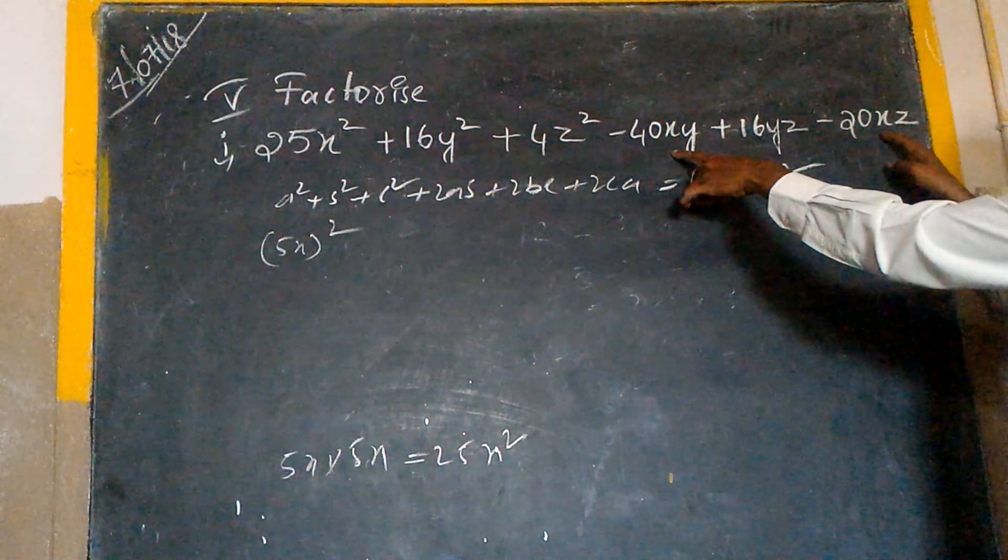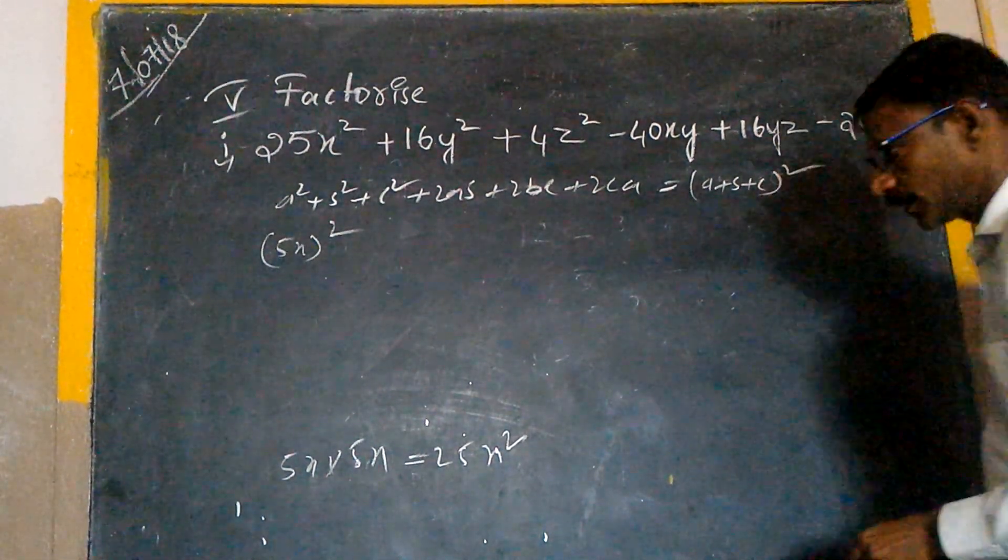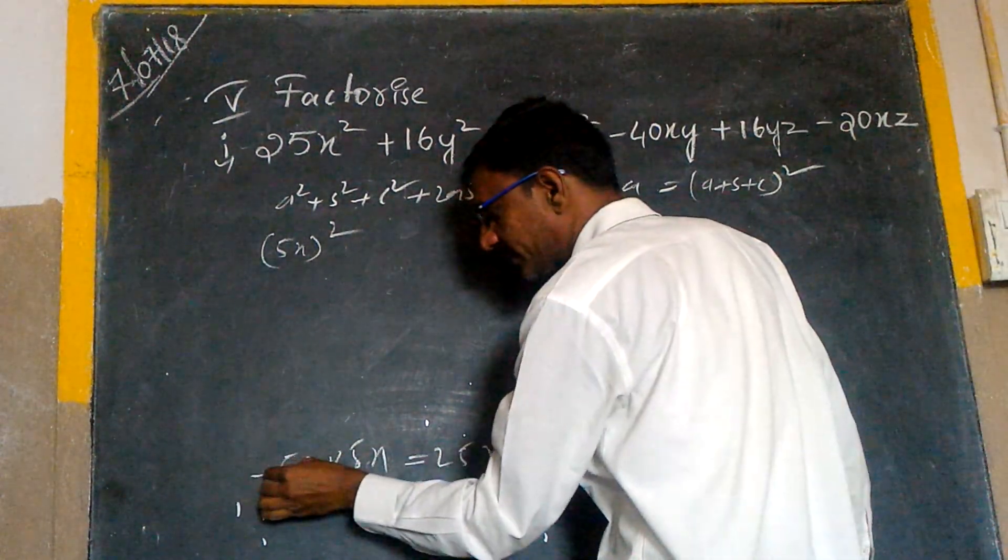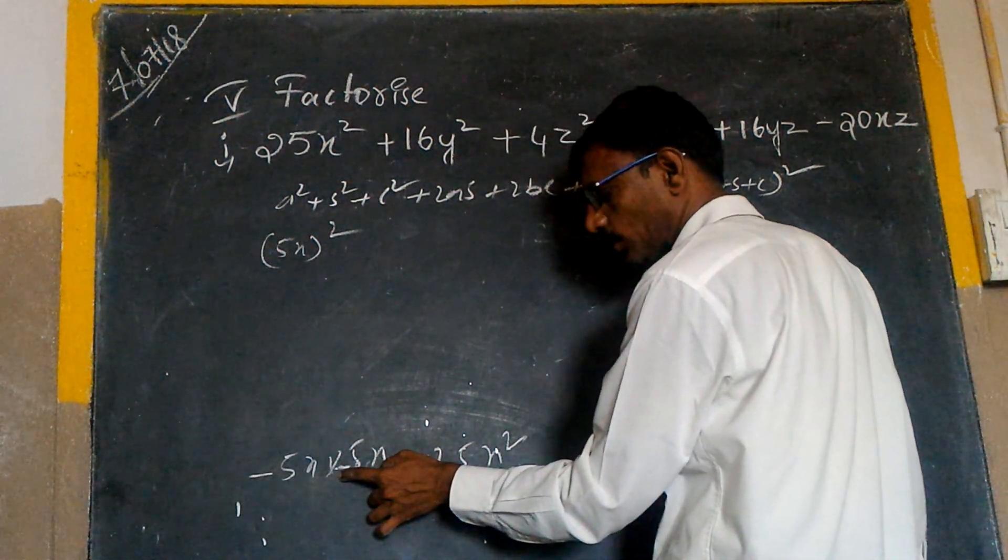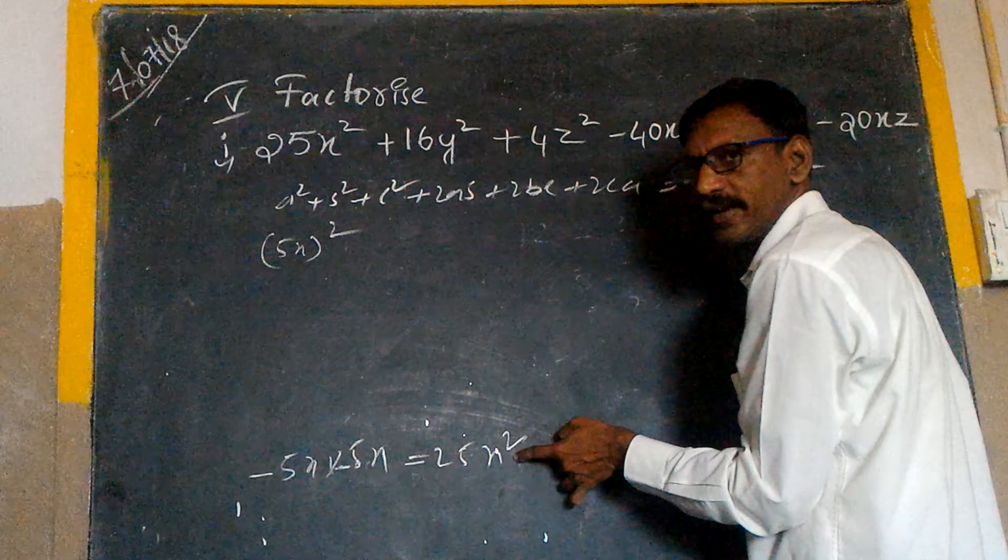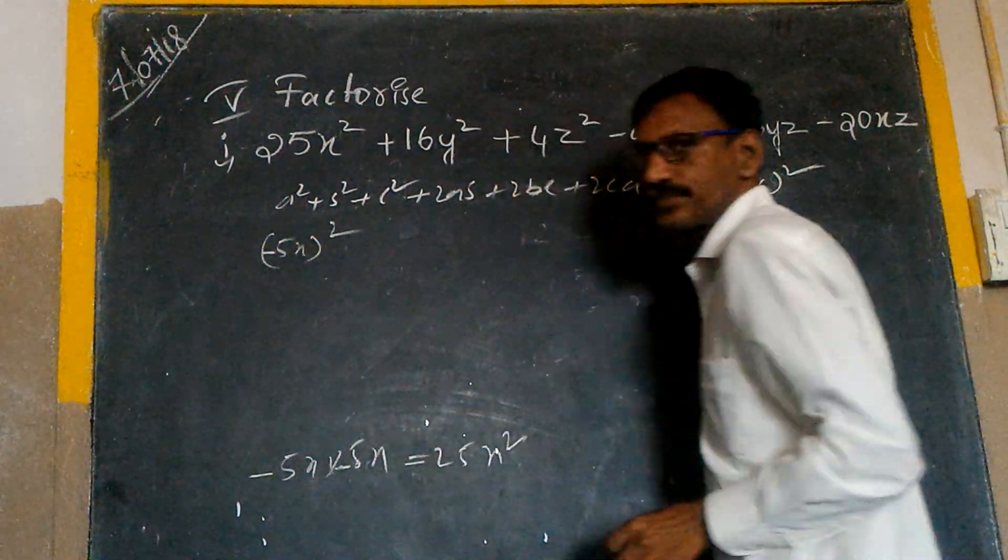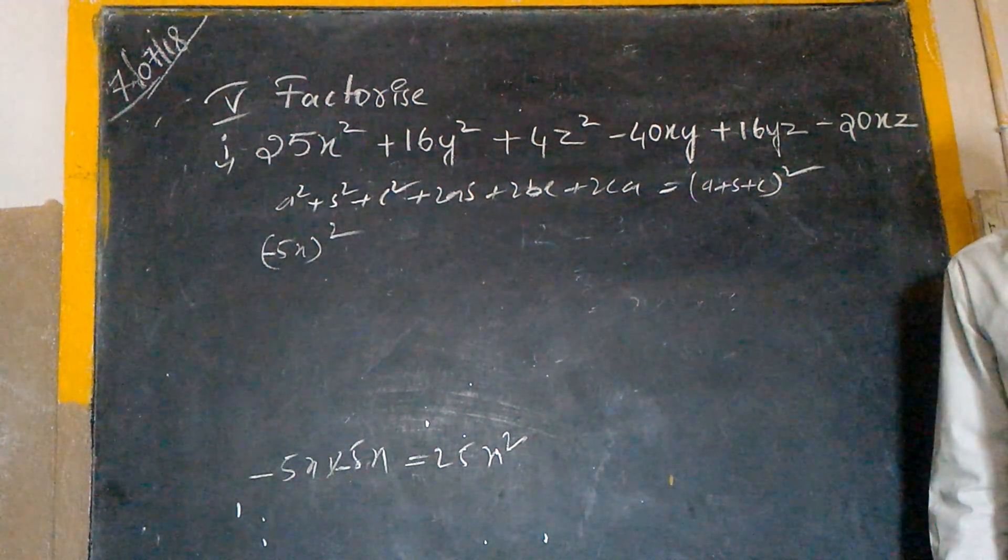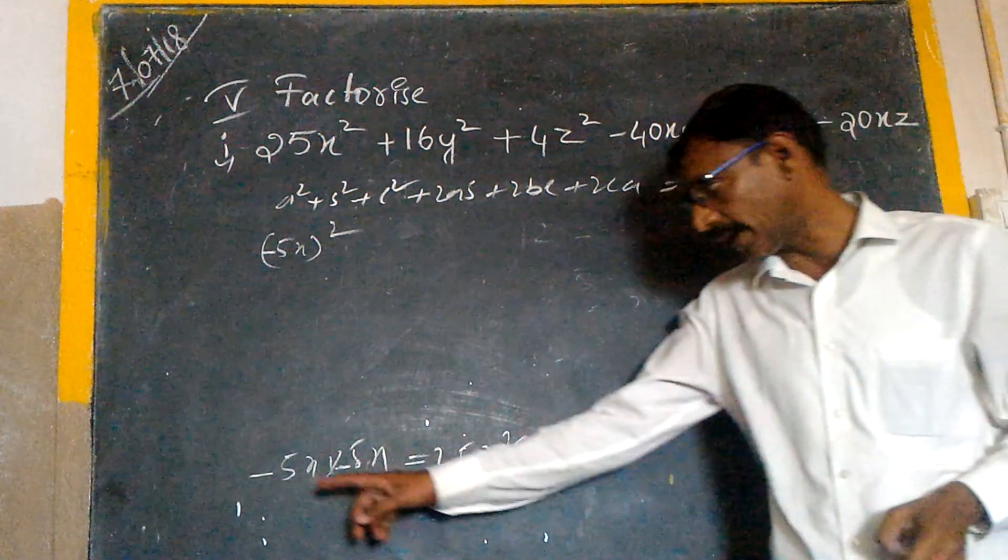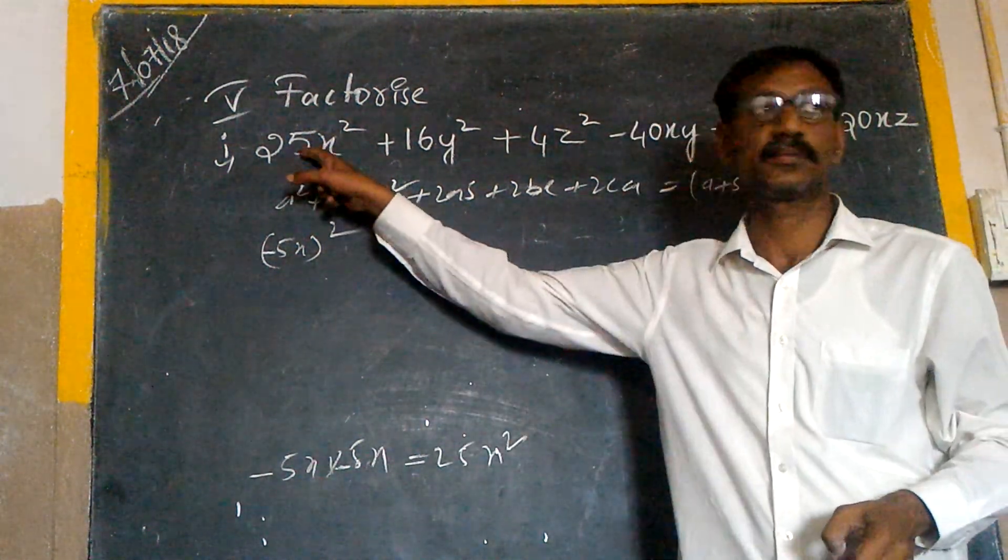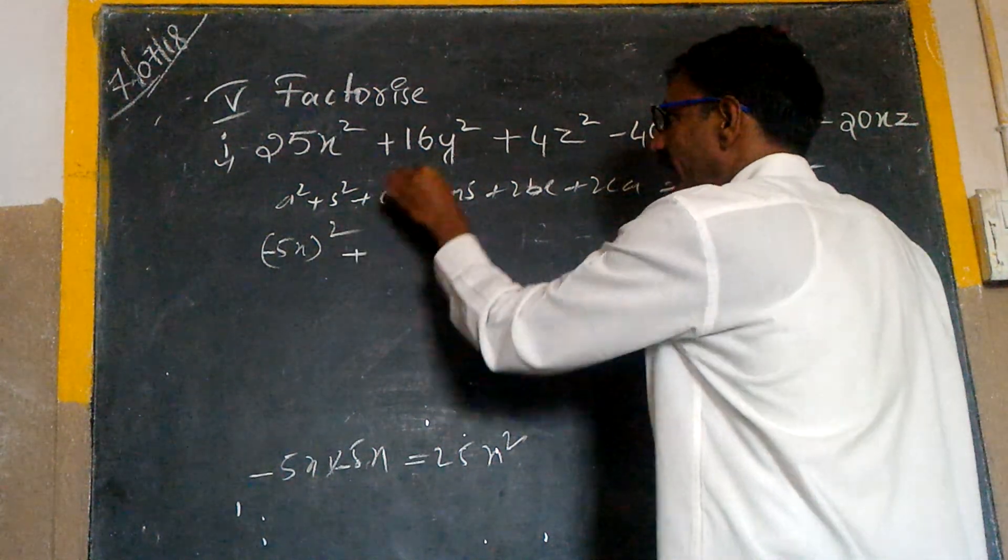Here x should be negative because in these two terms x is common. That is the reason I would like to place here minus and minus. Minus into minus is plus, plus only, plus 25x square. So can I write it down here minus? Even if you take minus, it should be 25x square only, because minus into minus is plus.